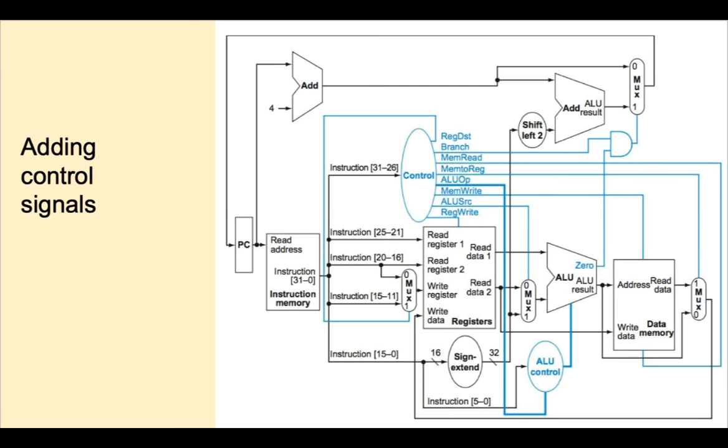Most of the control signals are one bit. The exception is ALU op, which is a two bit control signal that goes into the smaller ALU control unit. The other input to ALU control is the function field. The output of ALU control is a four bit field that tells the CPU what to do.